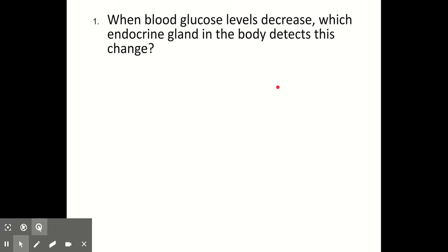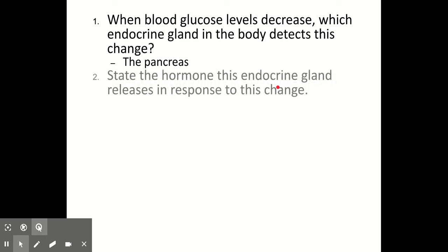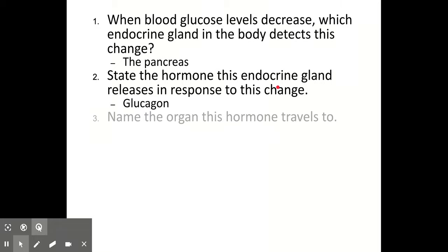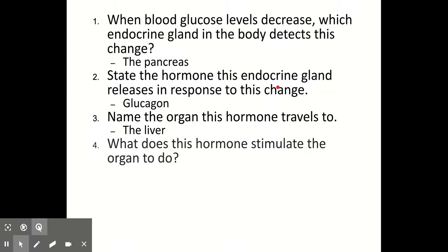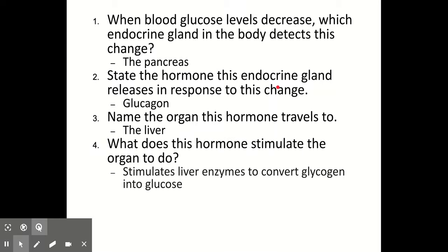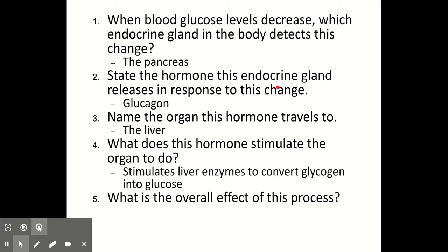Quick questions: when blood glucose levels decrease, which endocrine gland detects this change? The same gland as before — the pancreas. State the hormone this gland releases in response. Glucagon. Name the organ this hormone travels to — again it's the liver. What does this hormone stimulate the organ to do? It stimulates the liver enzymes to convert glycogen into glucose. And what's the overall effect? It will bring the blood glucose levels back to normal.